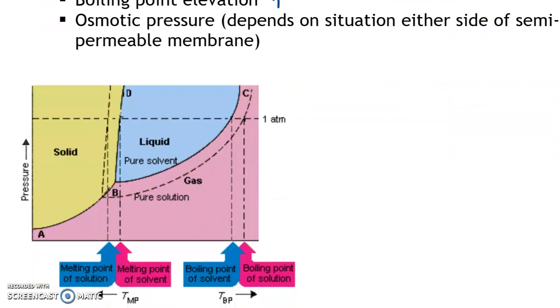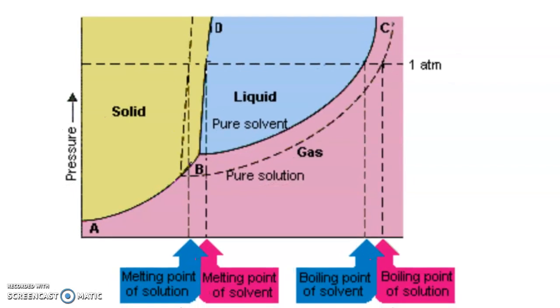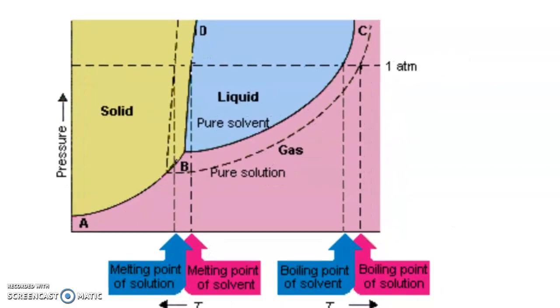So actually visualizing how a colligative property interacts is what this graph is showing us. You can see here the solid line is the normal graph for this particular solvent. You can see that's why it says pure solvent. So for example, that's pure water.